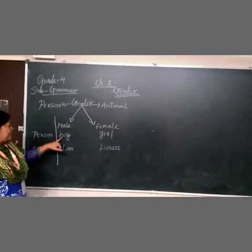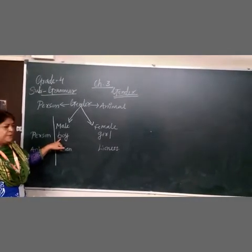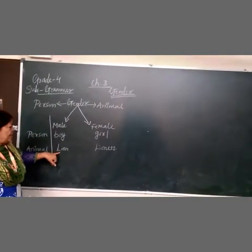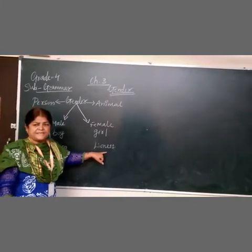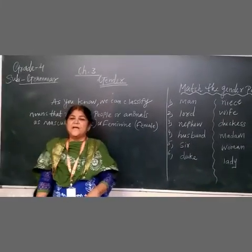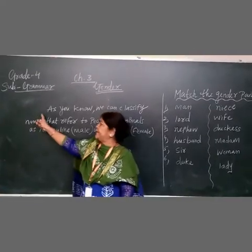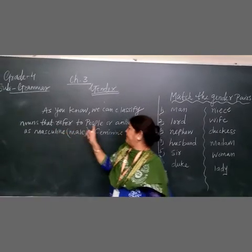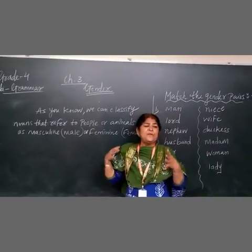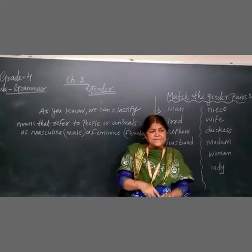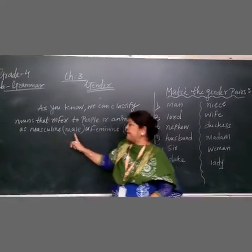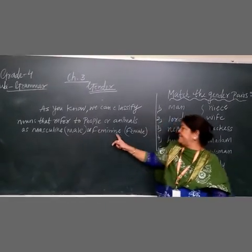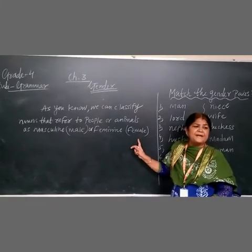Here is an example: boy. Boy is male. Girl, woman, sister, mother, auntie — we call them female. As you know, we can classify the noun that refers to people or animals into two main genders. Masculine means male — boy, man. Feminine means female — girl, woman.